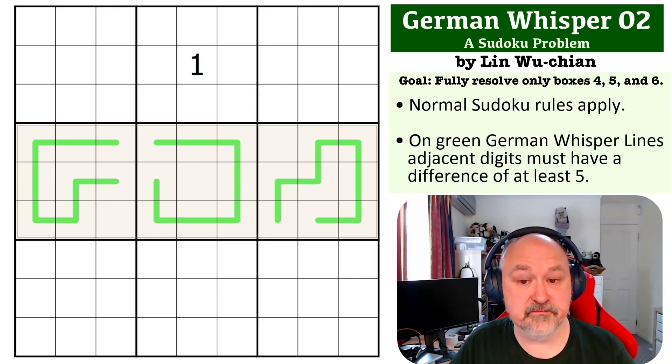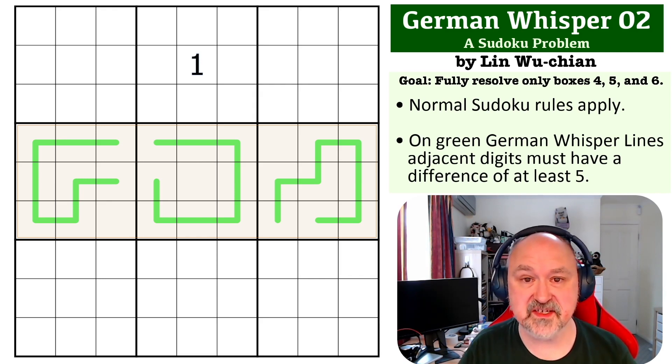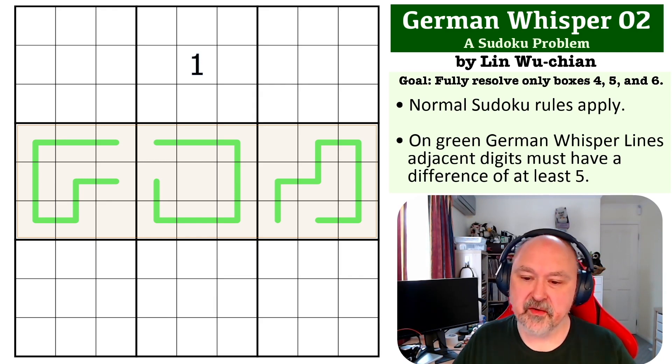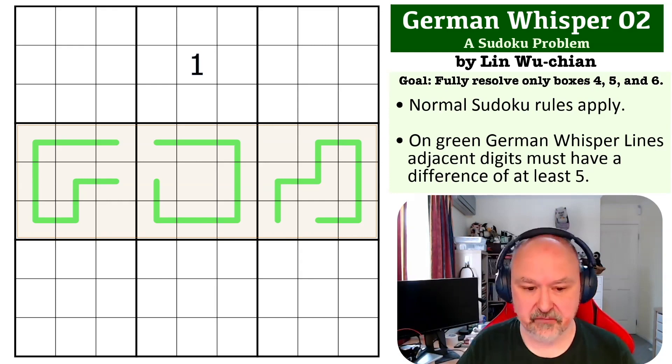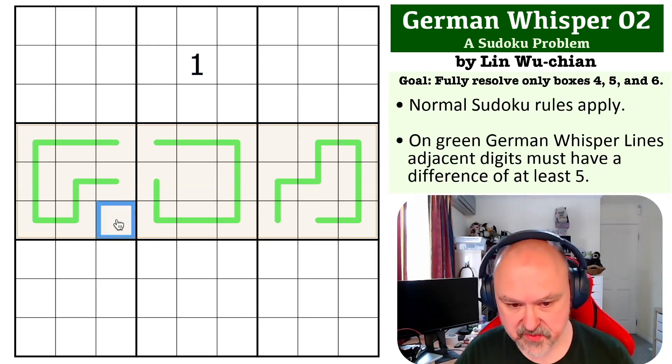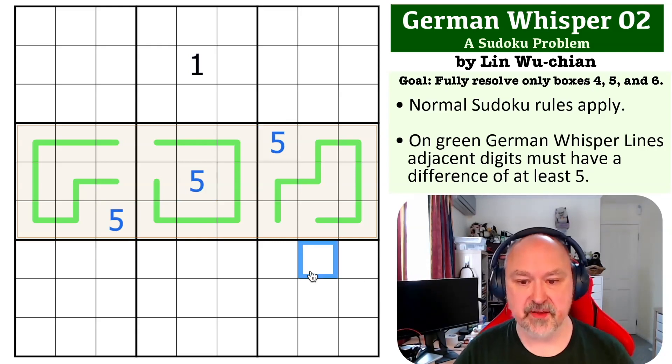Pause the video. I'll be back in a few seconds to explain how this one works. Okay, this uses something that I really like. One of the first things you know about German Whisper lines is you can never put a 5 on a German Whisper line, because 5 lower would be 0 or lower, 5 higher would be 10 or higher. Neither of those is possible. So the three cells that do not appear on the German Whisper lines must be 5s.